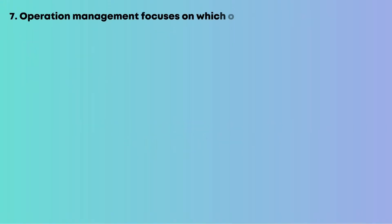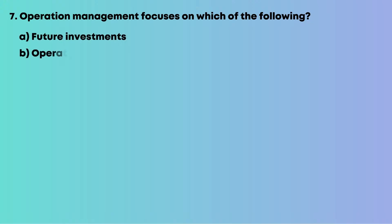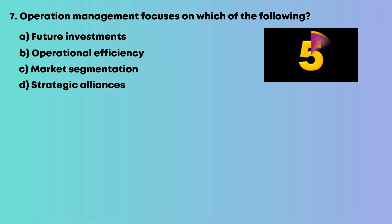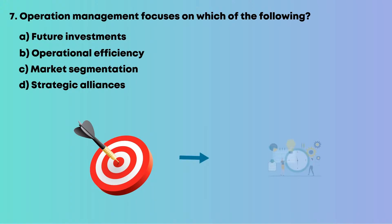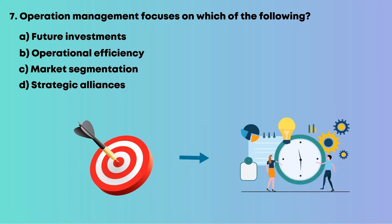Question 7: Operations management focuses on which of the following? Options are: A, future investments; B, operational efficiency; C, market segmentation; D, strategic alliances. The goal is smooth, efficient functioning of operations. So the answer is B, operational efficiency.